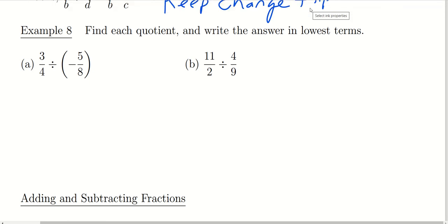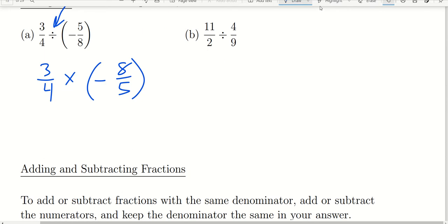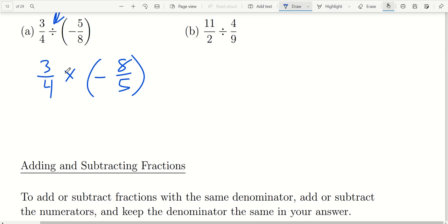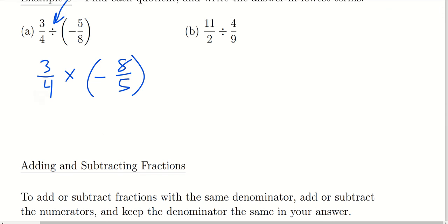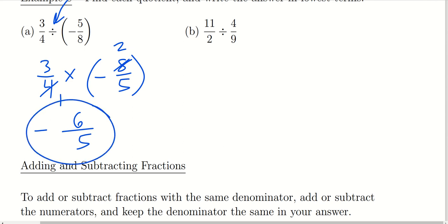For the first example we have 3 fourths divided by negative 5 eighths. We identify the operation as division, so we rewrite it using keep, change, flip. The problem becomes equivalent to 3 fourths times negative 8 over 5. We can reduce: 4 goes into itself once, and 4 goes into 8 twice. It's a positive times a negative so the answer is negative. Three times 2 is 6, and 1 times 5 is 5, so the final answer is negative 6 over 5.